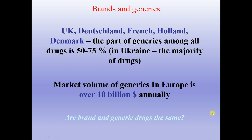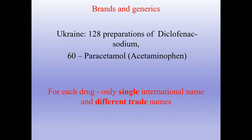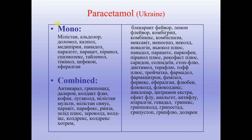So the question is: are brand and generic drugs the same? In Ukraine, as an example, there are 128 preparations of diclofenac sodium and 60 of paracetamol. This means around 60 trade names include paracetamol as an active substance. But for each drug there is only a single international name and different trade names. Paracetamol will always be paracetamol — but in Ukraine there are around 60 drugs called by different names, such as Milistan, Aldolor, and Dolomol, all containing paracetamol.